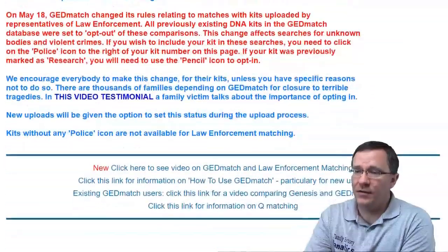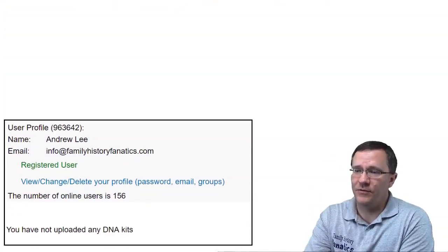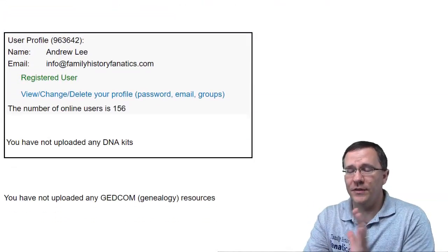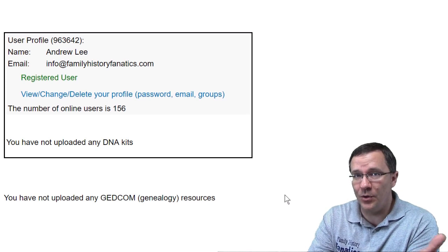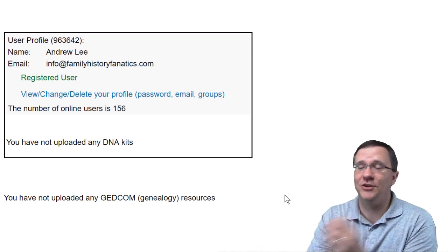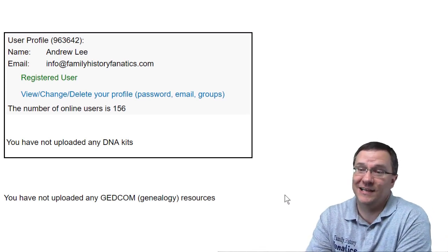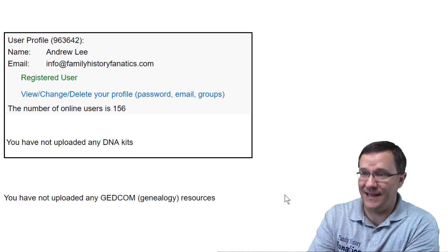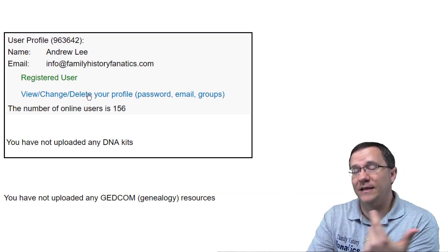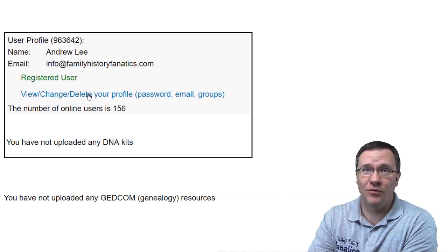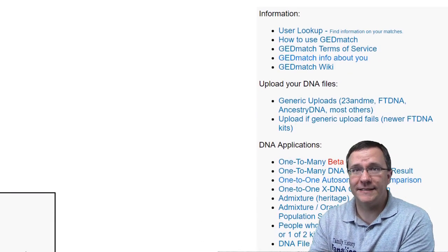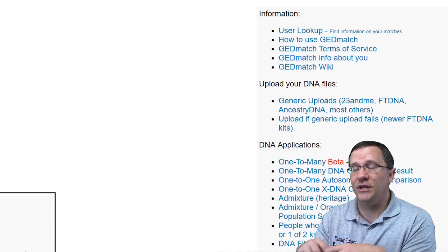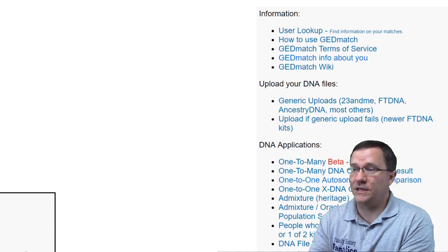As I scroll down I can see some different information. On the left-hand side there's information about the kits I've uploaded as well as any GEDCOM files — and in this case you can see I haven't uploaded anything. There's also a link to change anything about my profile right from here. On the right-hand side there's information about the different tools that I can use.